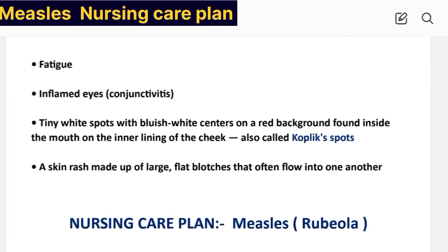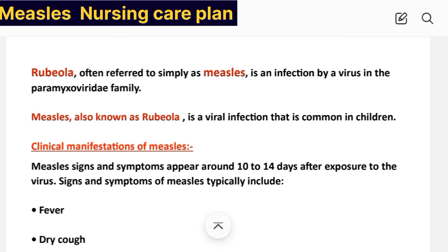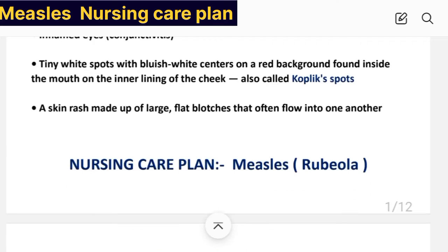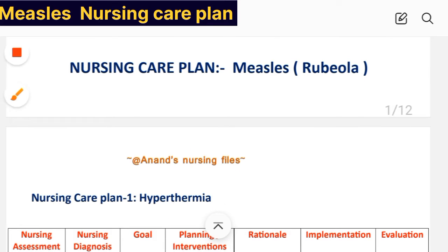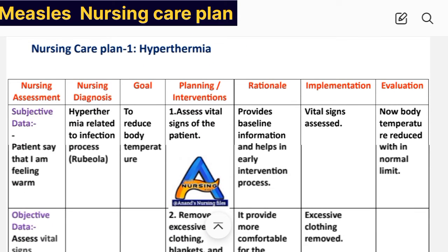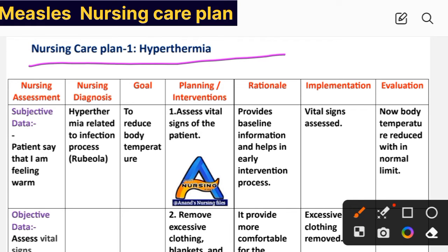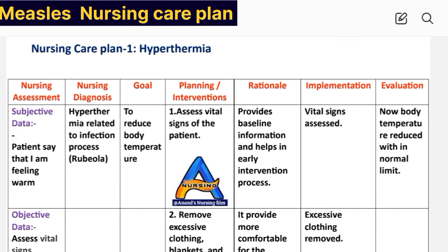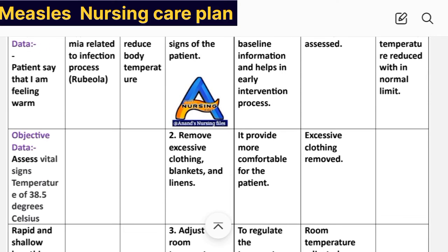These are the clinical manifestations of measles and rubiola, which is a viral infection caused by the paramyxoviridae family virus. Now let us look at our main topic: the nursing care plan for measles and rubiola. First, nursing assessment — this includes subjective data and objective data. The patient says, 'I am feeling warm.'